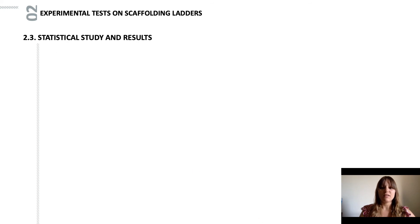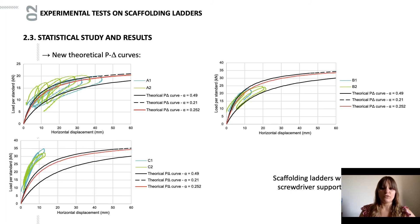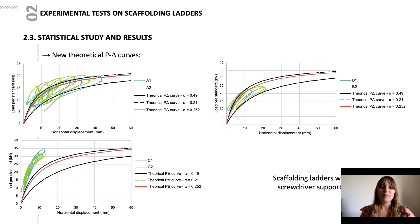From this conventional imperfection factor value of 0.25, we were able to draw the new theoretical load-displacement curves. Here is the example for ladders with screwdriver supports. The results for clevises and screw jack feet are given in the article. In both cases, we can see that these new curves better reflect the real behavior of this structure.